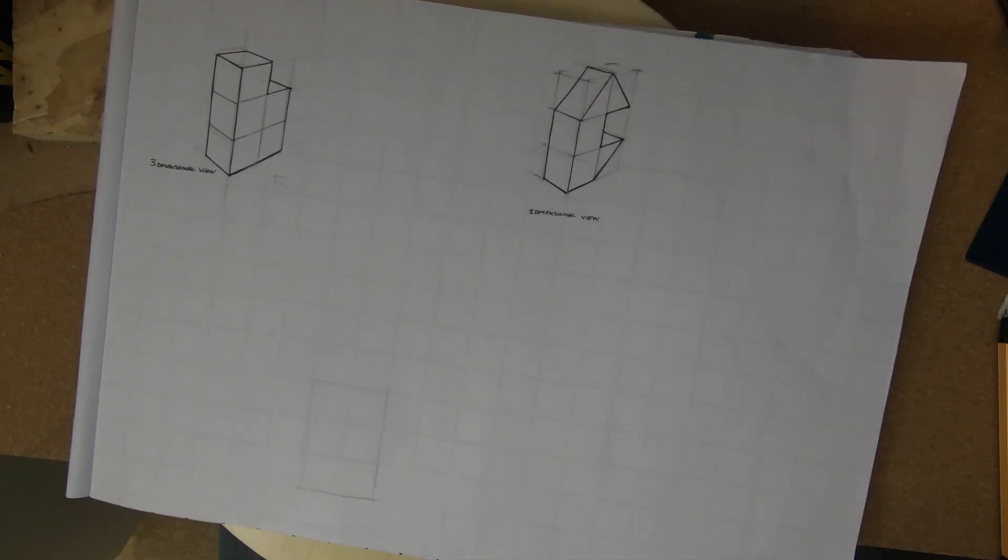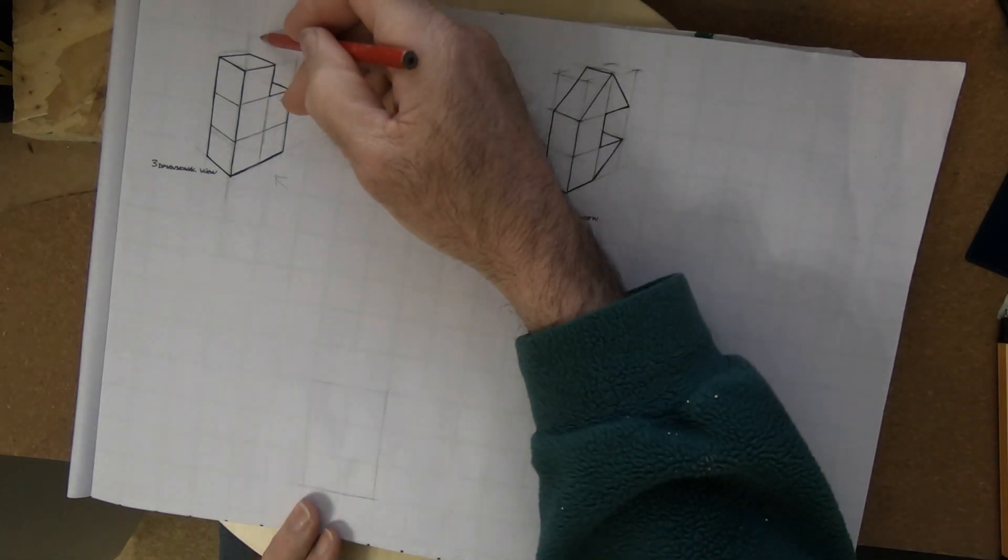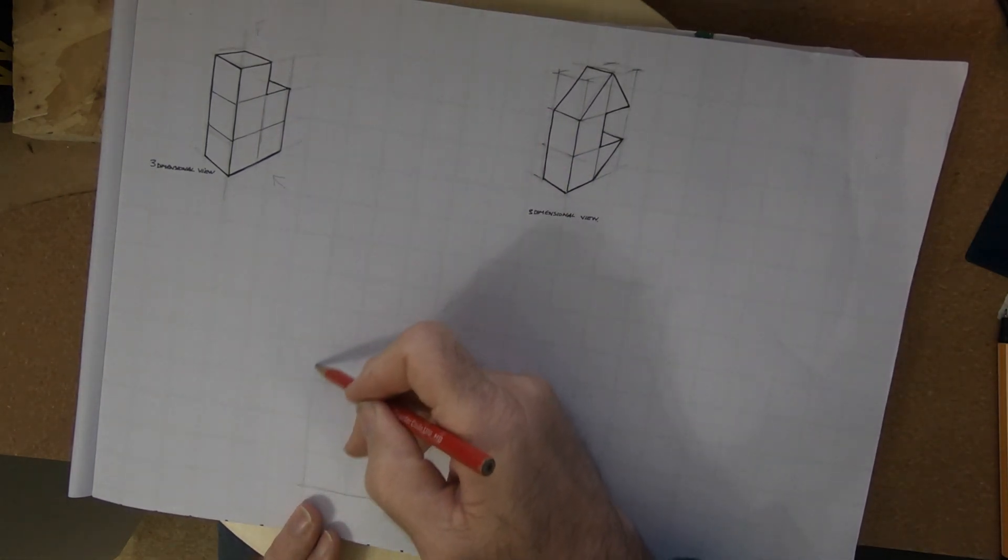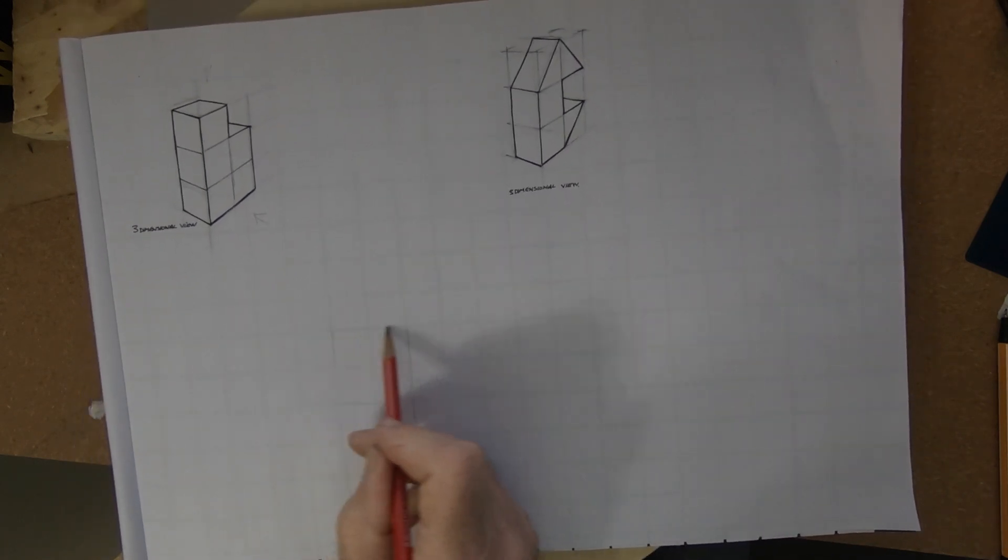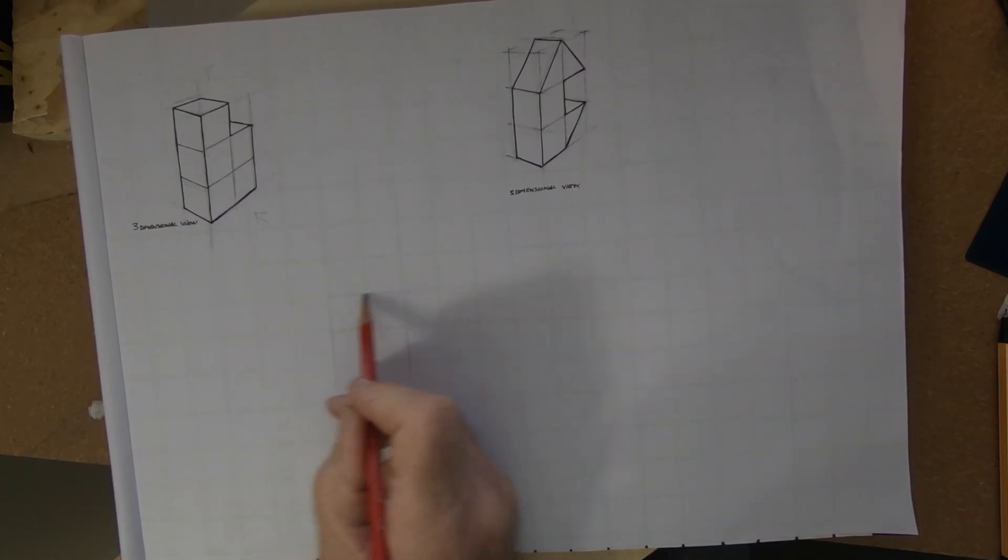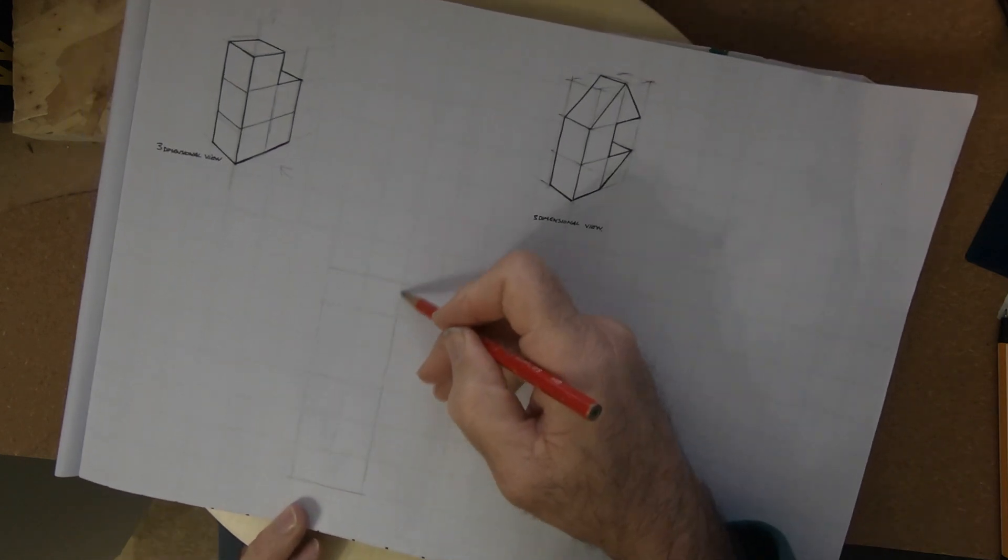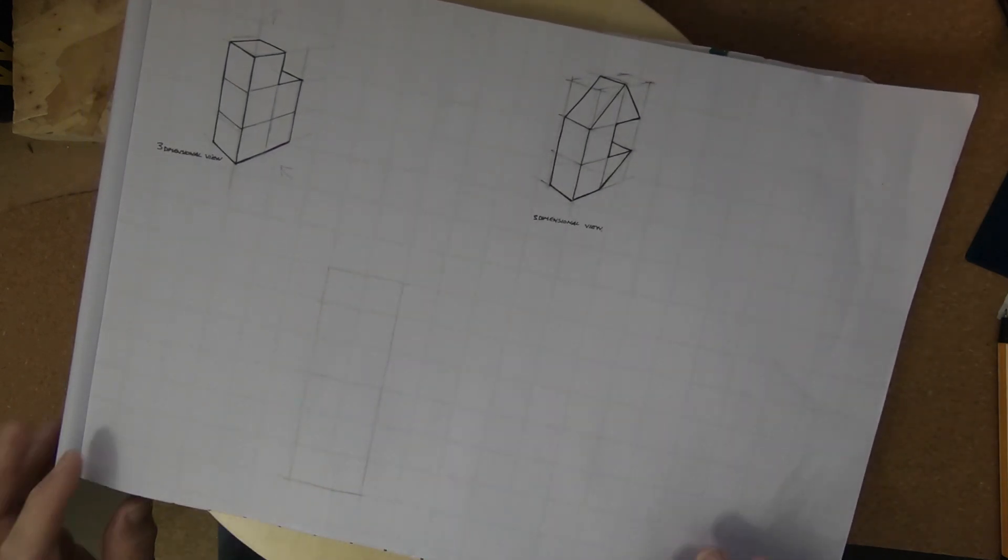So looking at different views now. The plan view looking above we're going to project that up above. Straight line straight from the elevation or you'll see the elevation get firmed in. I'm going to sketch in two vertical lines and two horizontal lines for the plan view. It's two squares wide and one square thick.